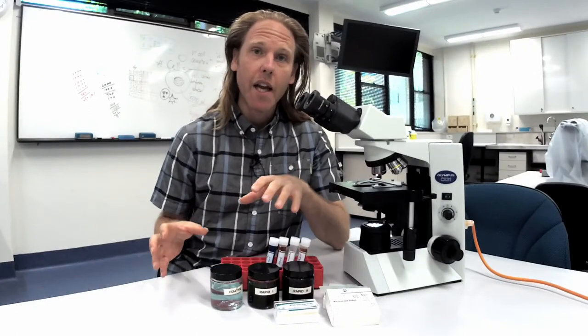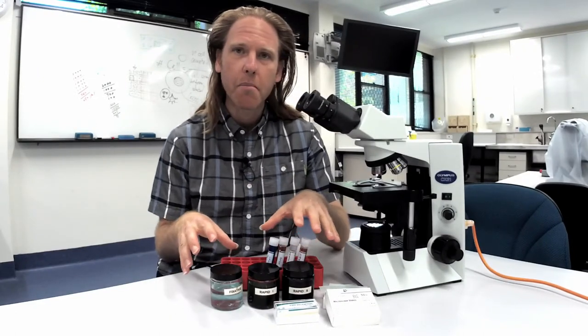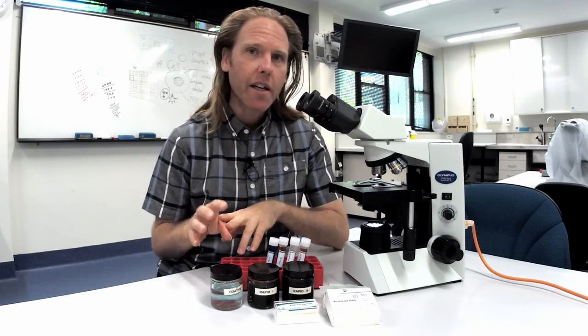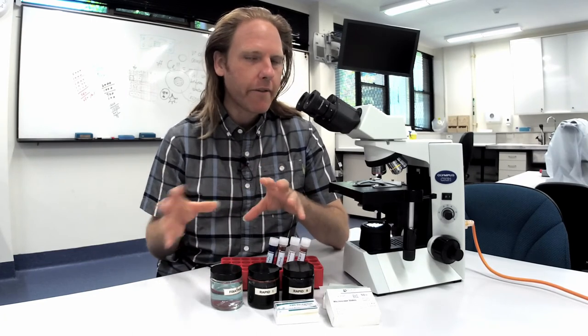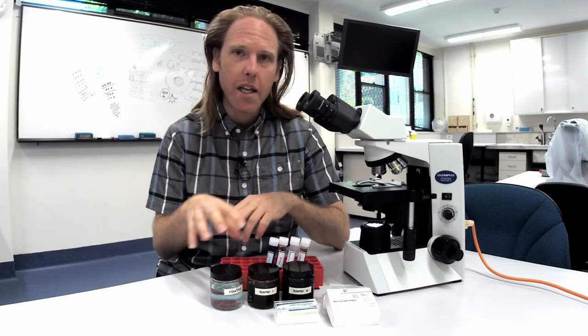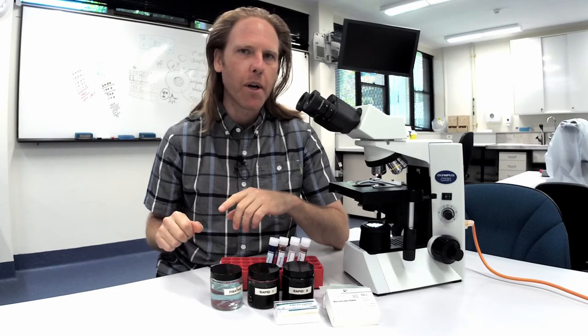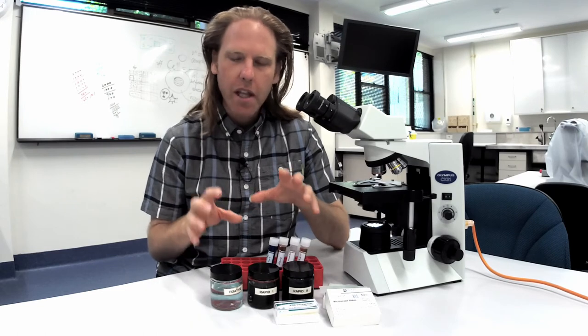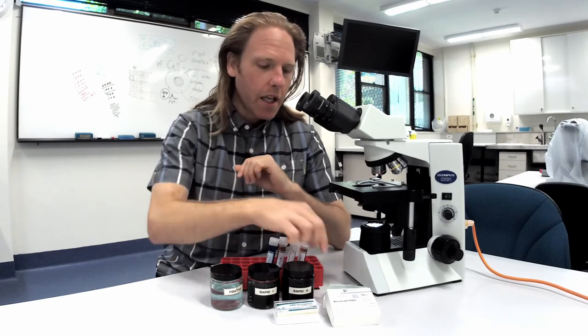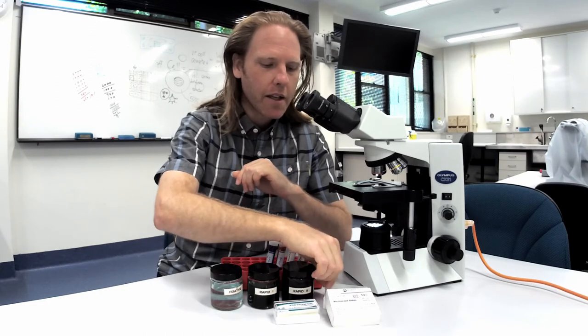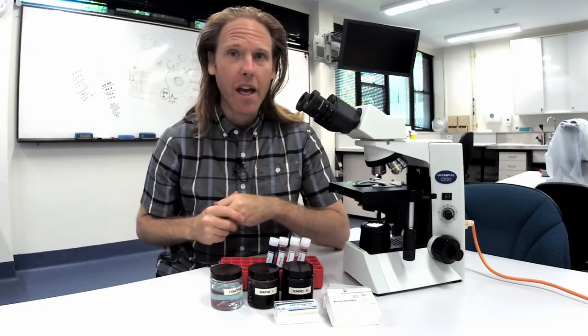Now how often you change the stains will depend on how many preparations you make and how dirty the preparations are. As a rough guide you can make roughly 50 preparations before you need to change the stains and once a week is generally a good starting point. Now if you think you're seeing bacteria or fungi you can stain up a clean new glass slide to double check or just change the whole stain.